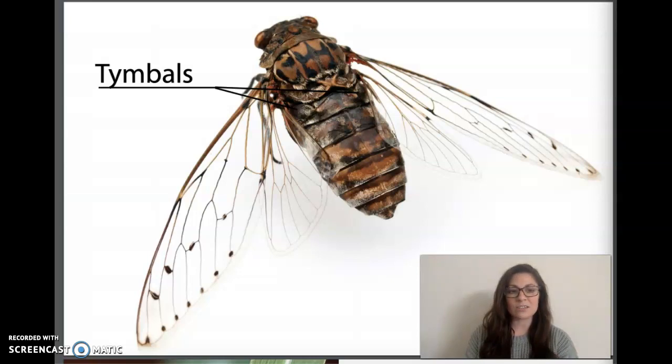Grasshoppers, crickets, and cicadas all use sound to communicate in much the same way that fireflies use their lights. Males attract females for the purpose of mating, making sure that these winged insects will continue to survive.